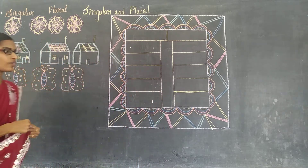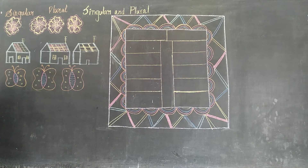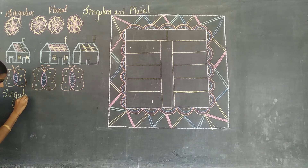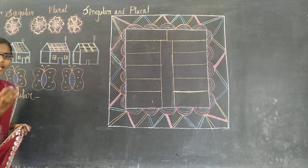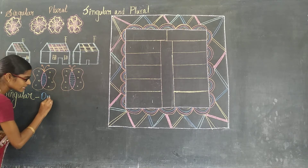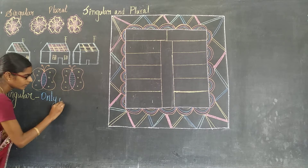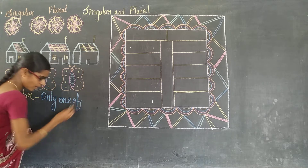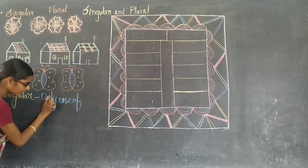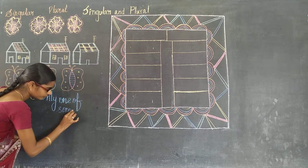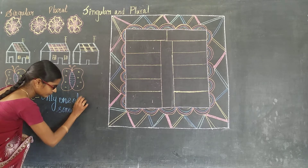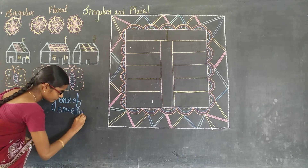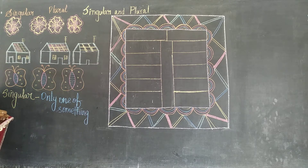Now let's have the definition for singular and plural. First one is singular. Singular means — many times I have told — only one of something. Only one of something.